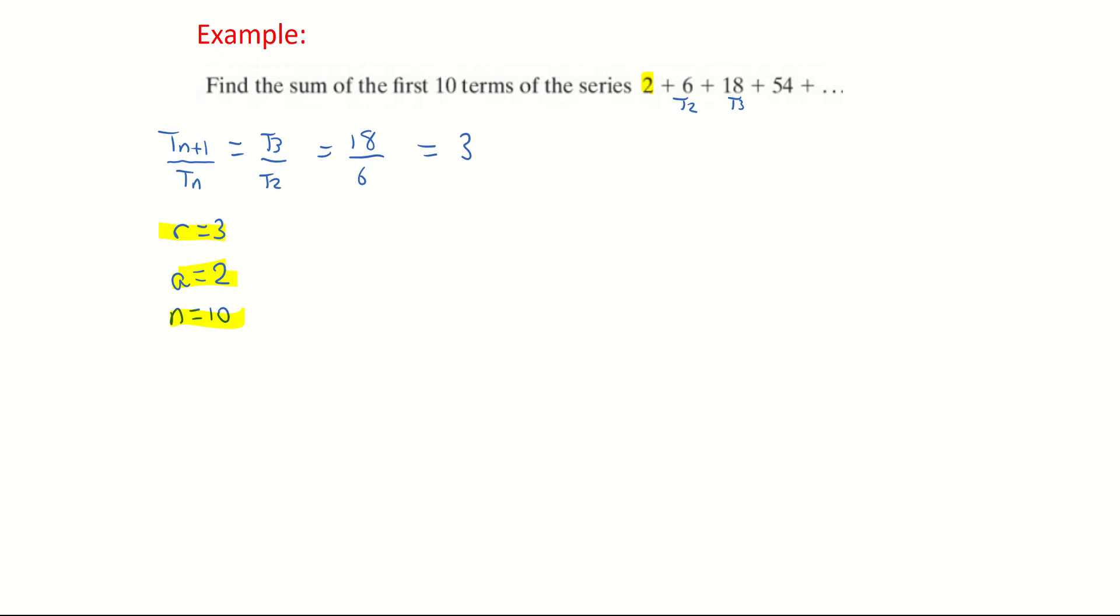So my formula for the sum of all the terms is given as Sn equals A times 1 minus R to the power of N all over 1 minus R.